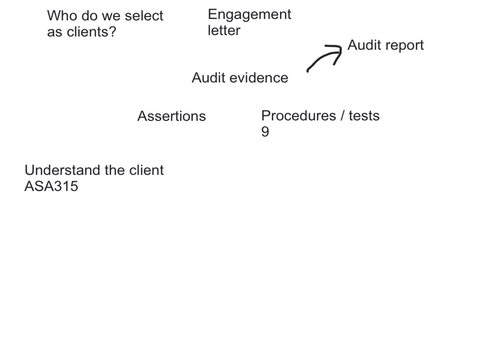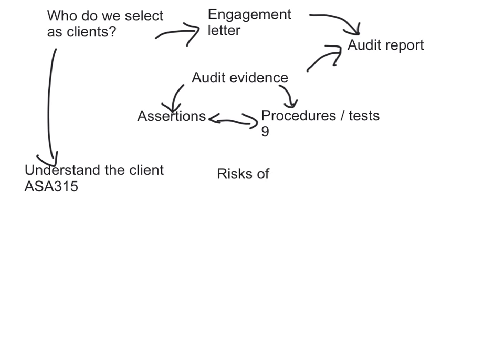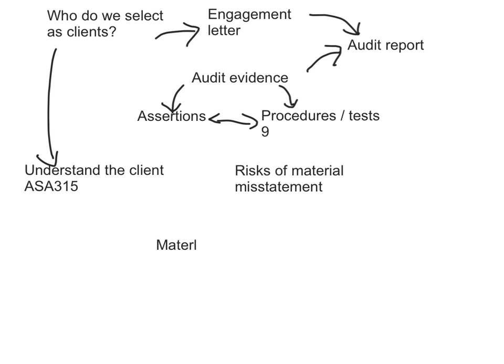My audit report requires my audit evidence, and I have to give an audit report because of my engagement letter. My audit evidence is organised based on assertions, and then my procedures. Some procedures go better with some assertions — we know that about vouching and occurrence or existence, tracing and completeness, and recalculation for accuracy and valuation. Understanding the client will help us identify risks of misstatement. When we think about risks of misstatement, we think about materiality — which misstatements am I looking for?